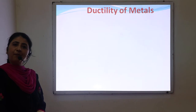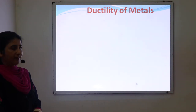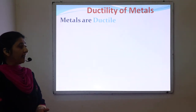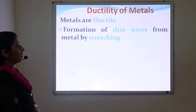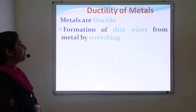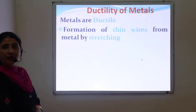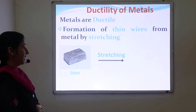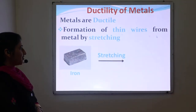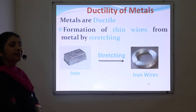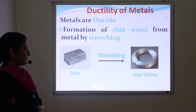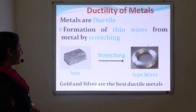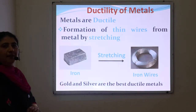The third physical property of metals is ductility. Ductility means metals are generally ductile in nature — in other words, thin wires can be formed from metal by stretching. For example, iron metal during stretching is converted into thin iron wires. Among the various metals, gold and silver are the best ductile metals.